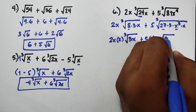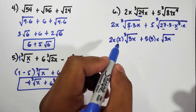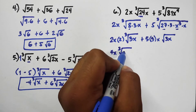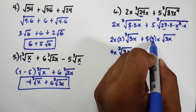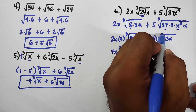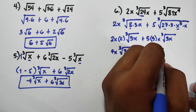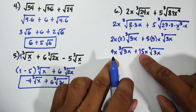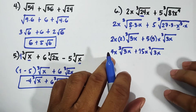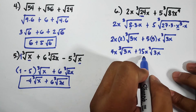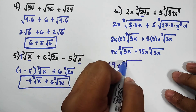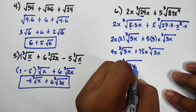Now both terms have the same radical ∛(3x). The coefficients 4x and 15x are like terms, so 4x + 15x = 19x. The final answer is 19x·∛(3x).